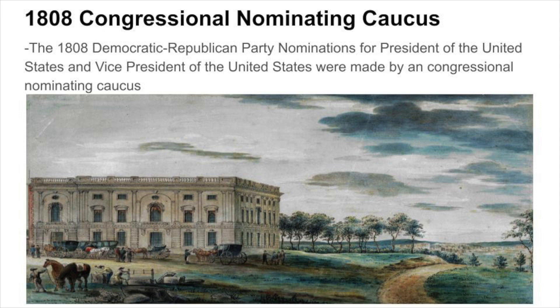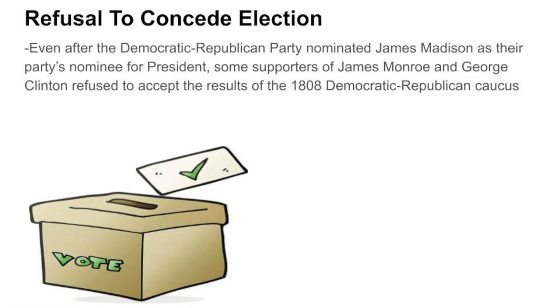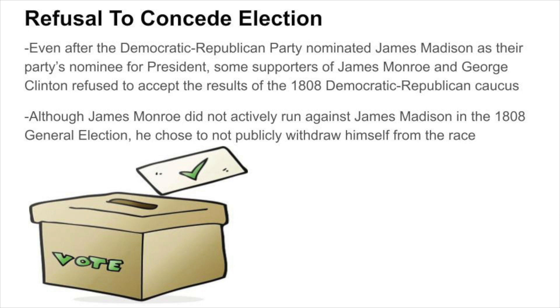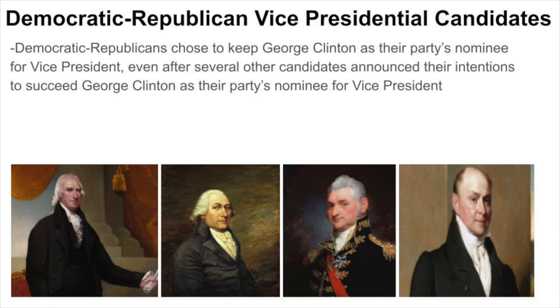Democratic-Republican Party nominations for President and Vice President in 1808 were made by a Congressional Nominating Caucus, while Federalist Party nominations were made through a national convention held in New York. Even after the Democratic-Republican Party nominated James Madison as their presidential nominee, some supporters of James Monroe and George Clinton refused to accept the caucus results. Although James Monroe did not actively run against Madison in the general election, he chose not to publicly withdraw himself from the race. Democratic-Republicans kept George Clinton as their vice presidential nominee, even after several other candidates announced intentions to succeed him.